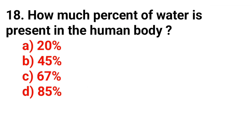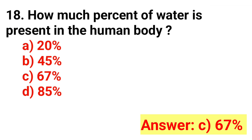Question number 18. How much percent of water is present in the human body? Answer option C: 67 percent.